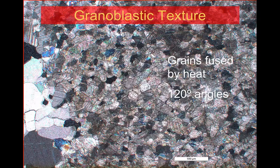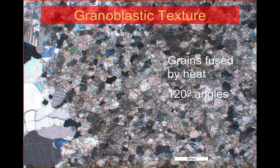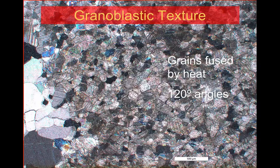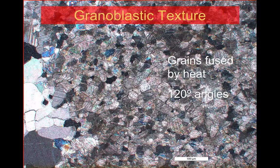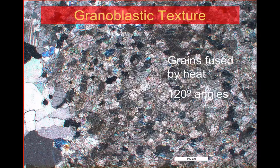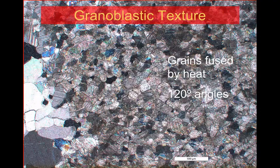The first texture I'd like to talk about is a granoblastic texture. This is a texture where all the crystals within the rock are a similar size, and in this rock there's no orientation or alignment of these crystals. It's a good indicator that the main agent of metamorphism here has been heat. Because of that, these crystals are fused with each other and they create a distinctive set of 120-degree angles. These can be a bit subtle so we do need to look carefully for them.